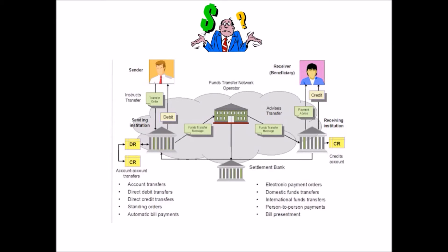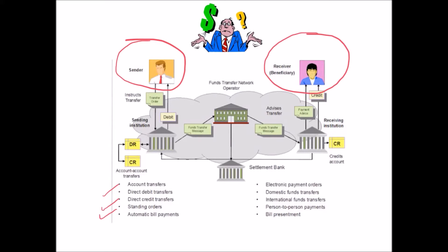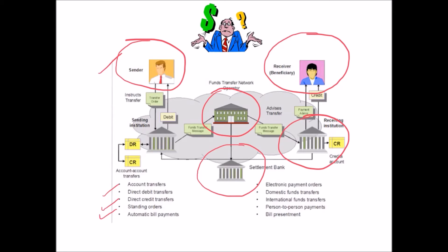Here we have a useful diagram explaining how electronic payments such as a direct debit, standing order, or automatic transfer actually work. The sender instructs their bank to pay the beneficiary — in this case the business. The sender's bank deals with a central bank, which takes the money from the sender's account and transfers it to the bank account of the beneficiary. It's all done electronically through the internet and computerized systems, which reduce the amount in the sender's account and increase the amount in the receiver's account.